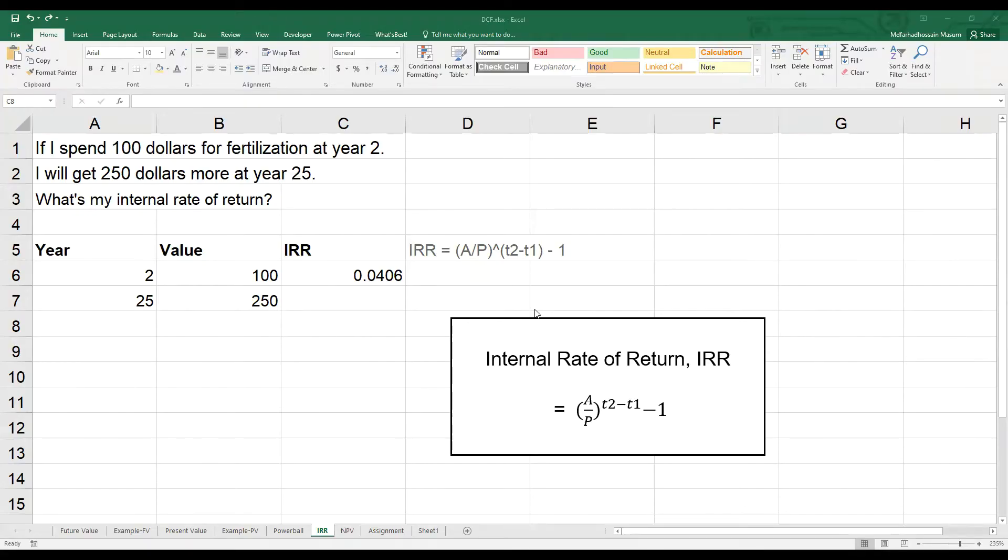Let's take the previous example, but formulate it in a different way. If I spend $100 for fertilization in year 2, I will get $250 more at year 25, so marginal increase is $250. What's my internal rate of return? You can probably guess that it is a little over 4%. Now we are ready to find out the most important number of all.